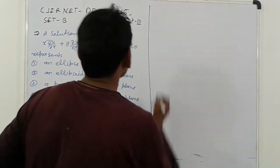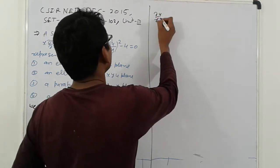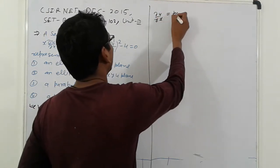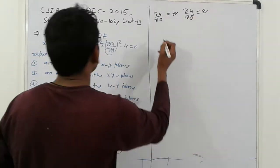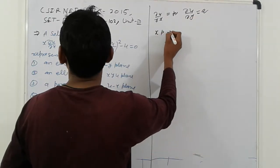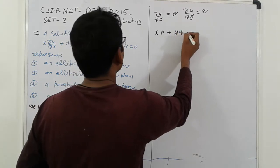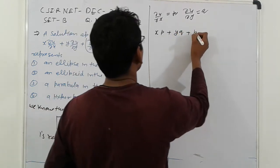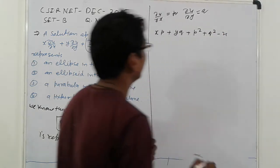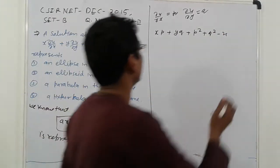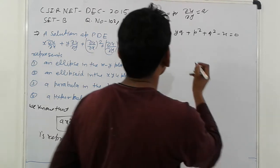So first, del u del x is equal to p, and del u del y is equal to q. So it is here x of p plus y of q plus p square plus q square minus u equal to 0.